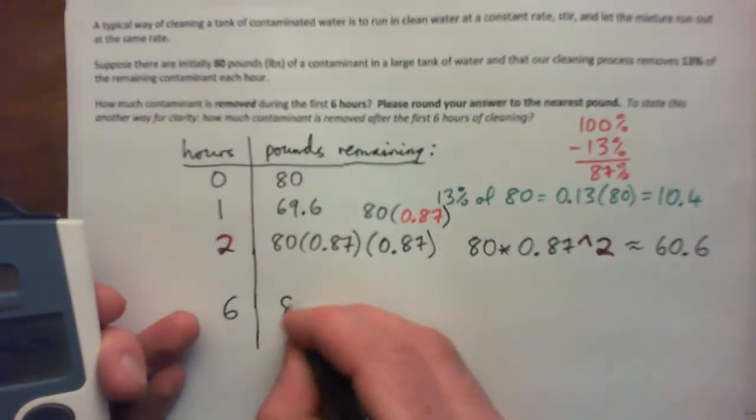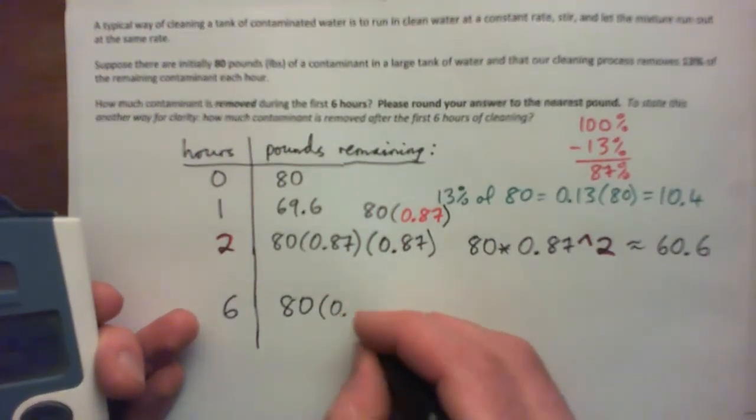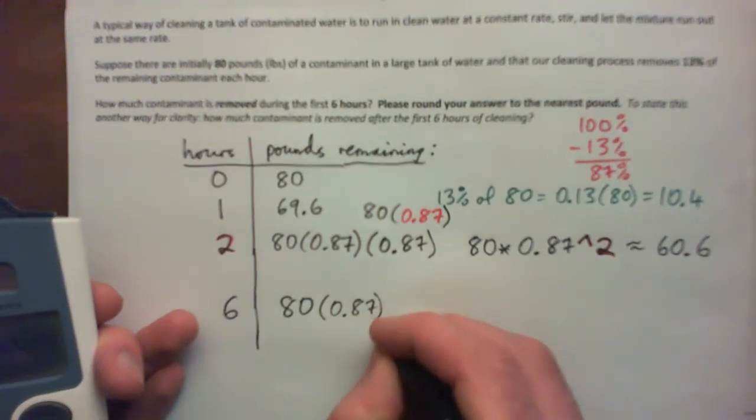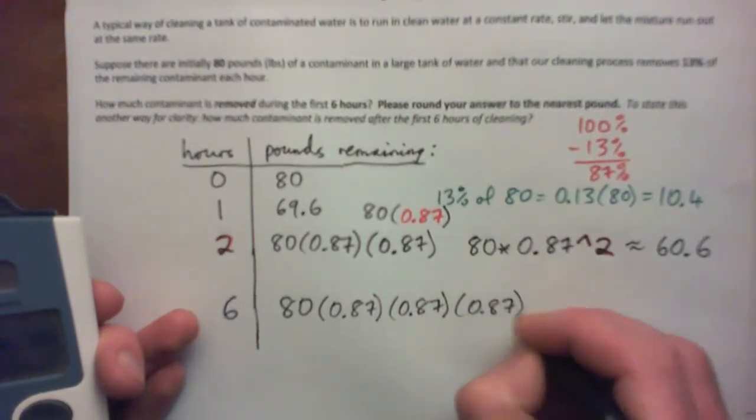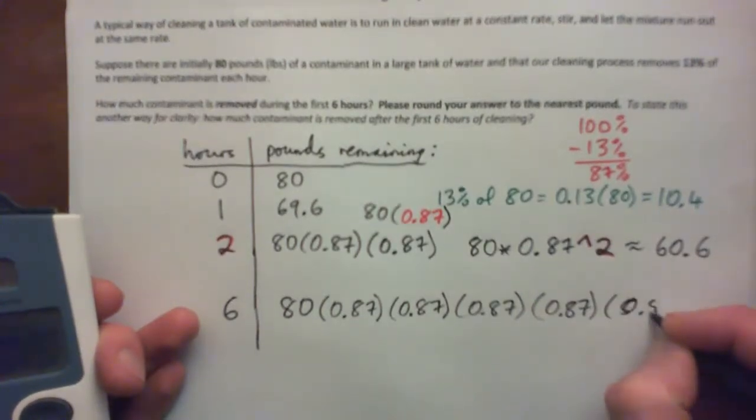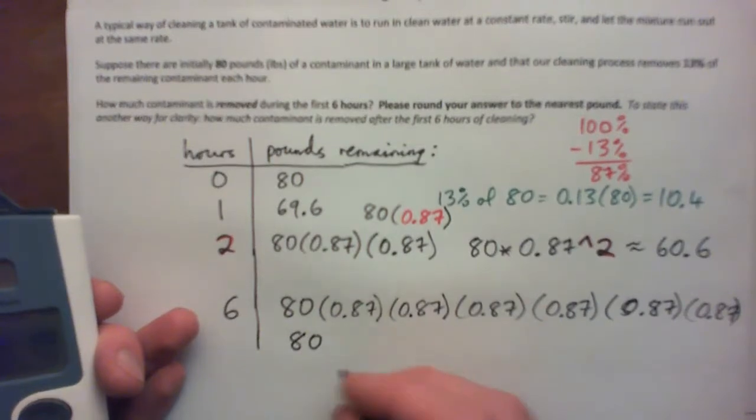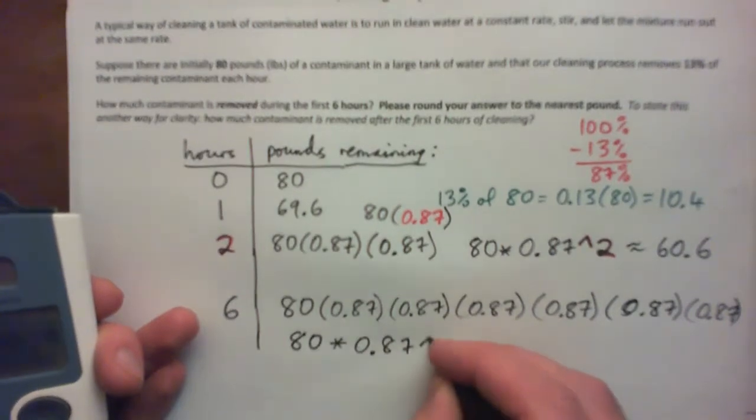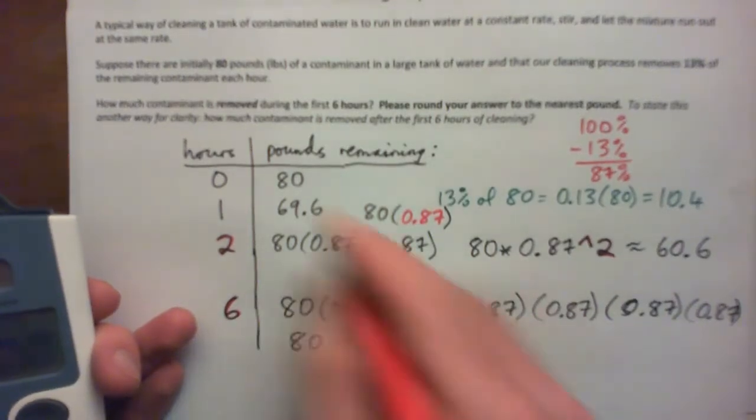After six hours, how many pounds are remaining? So you start with 80 pounds. To get how much is left after one hour, you times by 0.87. After two hours, times by 0.87 again. After three, four, five, and six hours, times by 0.87 each time. That's how much is remaining after six hours. Or in calculator form, it's 80 times 0.87 to the power of 6.